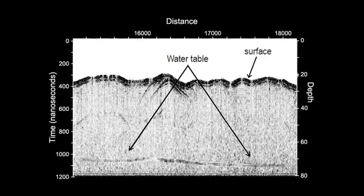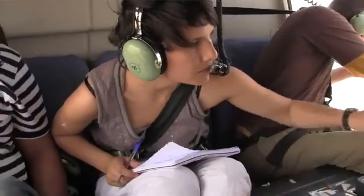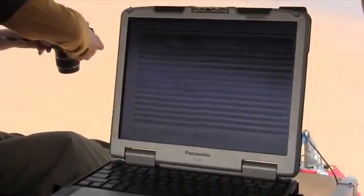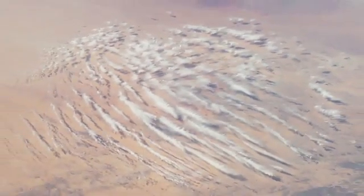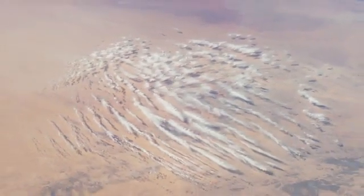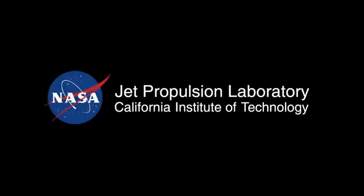This is the only technique that can map subsurface water on a large scale — that can allow us to see what lies beneath these sand sheets and sand dunes, in terms of water resources, but also in terms of geological information that helps us understand why these deserts have transformed into deserts, as we know before they were wet environments.